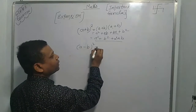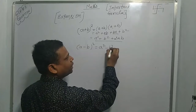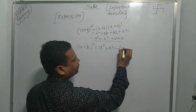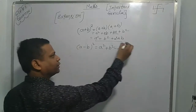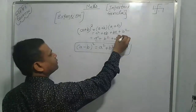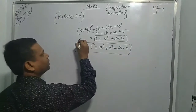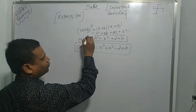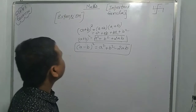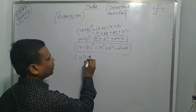And a minus b whole square gives a squared plus b squared minus 2ab. This is your second formula. The first formula is a plus b whole square equals a squared plus b squared plus 2ab.